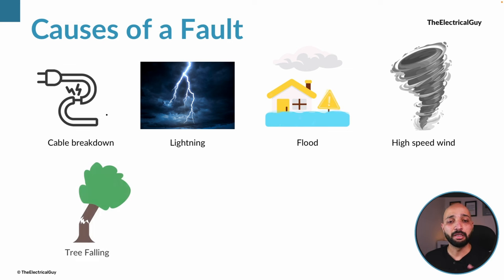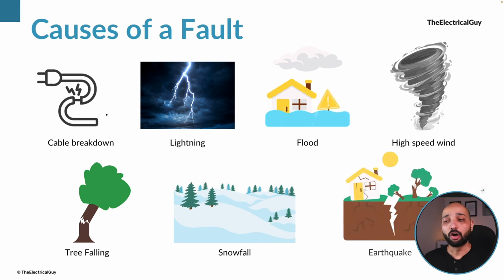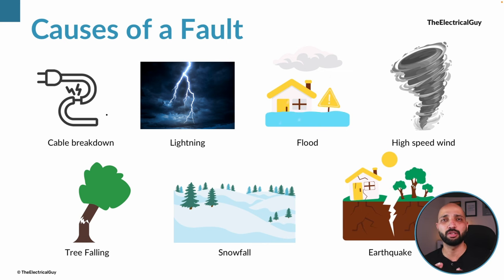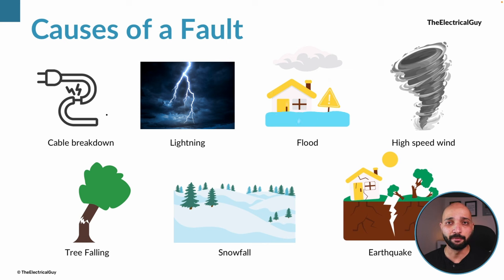There can be trees falling on the line — this is generally seen in the distribution network and to some extent in the transmission network — or snowfall on equipment and transmission and distribution lines, or situations like earthquakes. Majority of these situations are natural in nature, but there can also be equipment failure or equipment malfunction that causes current to divert from its intended path.